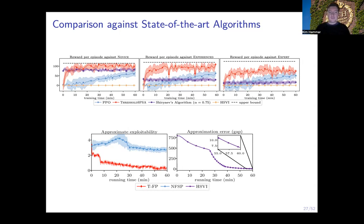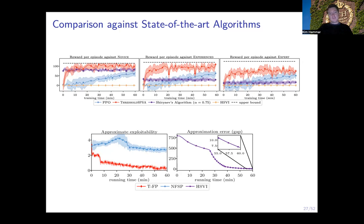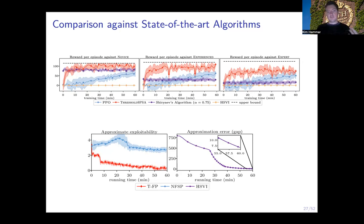In the bottom plot, on the y-axis you have the distance to the equilibrium. Our algorithm is shown in red, the blue one is a deep reinforcement learning fictitious play algorithm, and the purple one is a dynamic programming algorithm. Our algorithm converges near the equilibrium after around one hour of computation, much faster than the neural fictitious play algorithm. Interestingly, the dynamic programming algorithm (purple, HSVI) converges at almost the same rate as ours, which is quite surprising given that HSVI is known to be slow and impractical for most games.